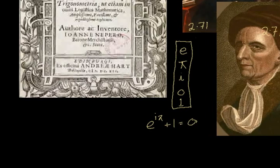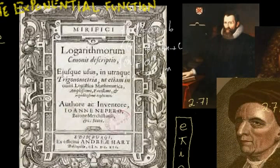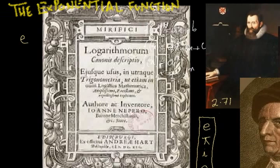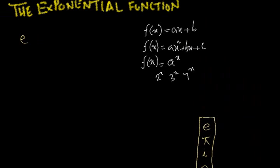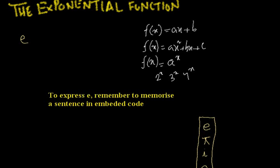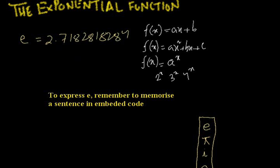If you want to remember the number e, there is a trick to it. One trick is a special mnemonic sentence: 'To express e, remember to memorize a sentence in embedded code.' Every word corresponds to a digit of e. The digits of e are 2.7182818284 — the first 11 digits. So: 'To' is 2 letters, 'express' is 7 letters, 'e' is 1, 'remember' is 8, 'to' is 2, 'memorize' is 8, 'a' is 1, 'sentence' is 8, 'in' is 2, 'embedded' is 8, 'code' is 4. Pretty neat.